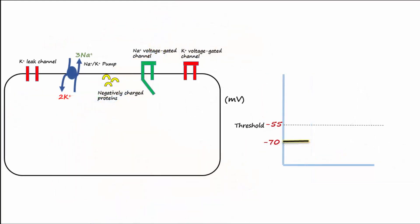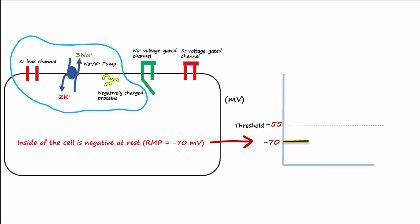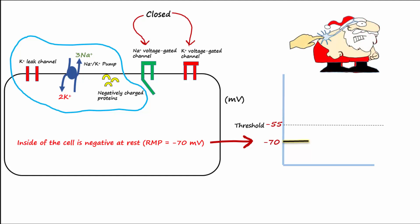When the cell is at rest and not sending signals, the RMP has been established by sodium-potassium pumps, leak channels, and negatively charged proteins. RMP simply means that the inside of the cell is negative at rest, and notice that the sodium and potassium voltage gates are closed at rest. To get an action potential, first we must have an excitatory stimulus that brings the membrane potential to threshold. The example we gave was a mechanical stimulus that increased calcium permeability, allowing calcium to enter the cell and make the inside more positive, allowing threshold to be reached. This stimulus is called an excitatory graded potential.